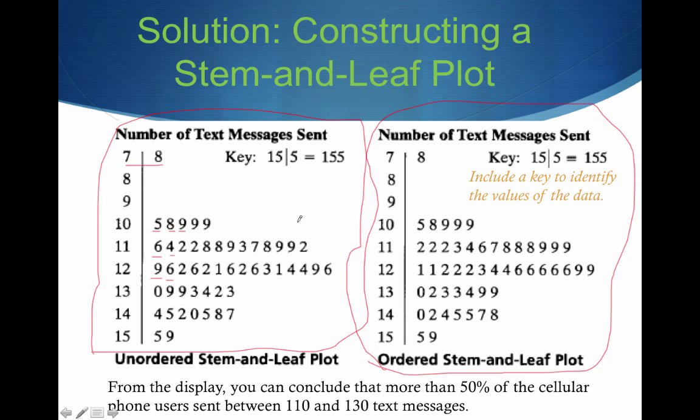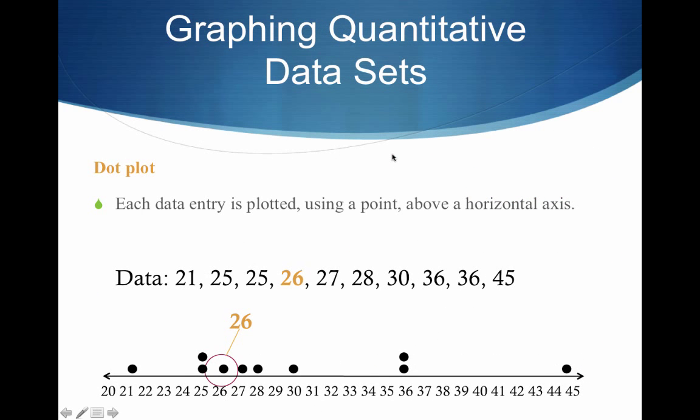Notice how both stem and leaves have a key. You've got to include a key so that somebody who is just looking at your stem and leaf plot knows what your stems are and what your leaves are. And so, we can just take something like 155, call it our key, and use the vertical bar to denote what is the stem and what is the leaf. In this case, 15 being the stem and 5 being the leaf. And why do we do this, guys? Why do we even care? Well, it actually does give us an idea of how our data is distributed. From the display, you can conclude that more than 50% of the cell phone users sent between 110 and 130 text messages. We can also see we've got this kind of outlier out here. This 78 seems far removed from everything else.